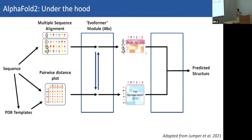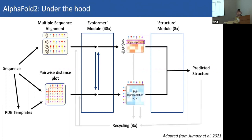The Evoformer outputs an optimized representation of the multiple sequence alignment and the pairwise distance plot, and these get fed into the second neural network — the structure prediction module. The researchers at DeepMind found that recycling certain elements of this workflow back to the beginning improves protein prediction. This recycling is done three times by default, although emerging evidence suggests increasing up to 15 recycling steps can help. That's essentially how AlphaFold works.